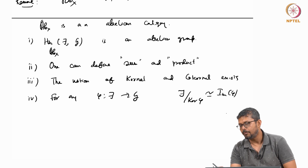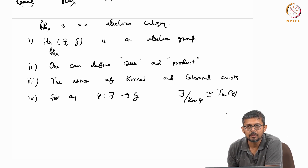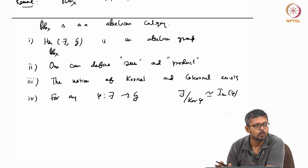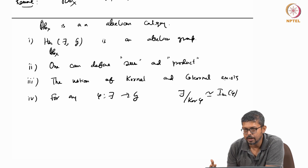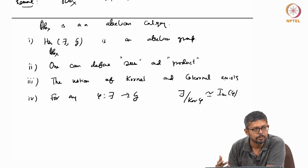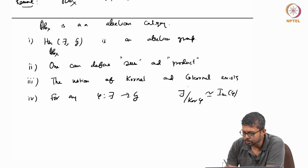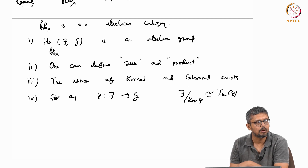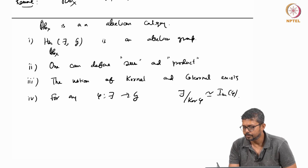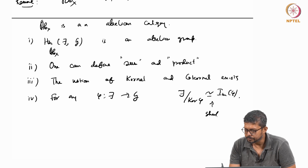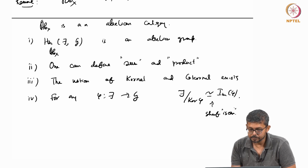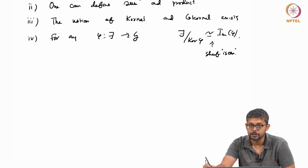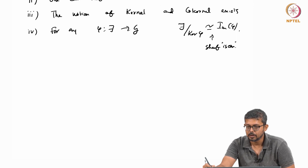When I say the image of phi after shiftifying — when you take the quotient f modulo kernel of phi, this need not be a shift, so you do the shiftification. Similarly, the image of phi need not be a shift, so you do the shiftification. I should write a tilde, but just not to make the notation complicated. So it is always better to work with sheaves, not pre-sheaves.